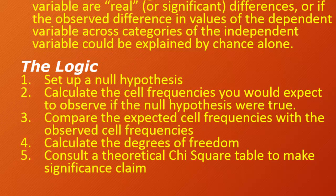We calculate the degrees of freedom, which is based on the size of the table or the number of cells in the matrix. The more cells there are in a table, the greater the opportunity for observed distributions to depart from expected distributions, so we need to make an adjustment. Once we have our chi-square statistic and our degrees of freedom, we consult a chi-square distribution table to determine our level of significance. If you're using SPSS, it's done automatically for you.